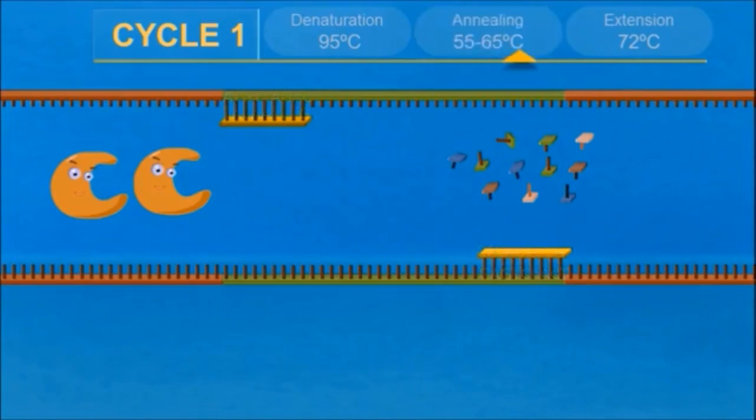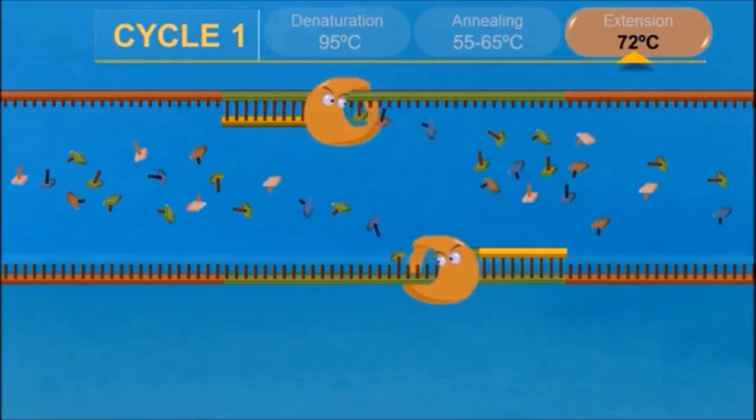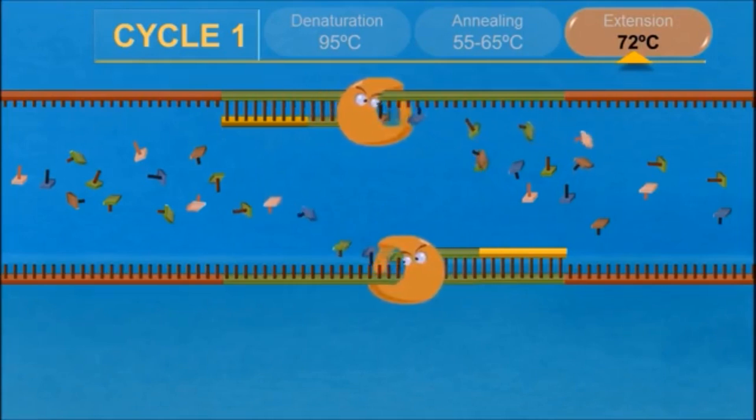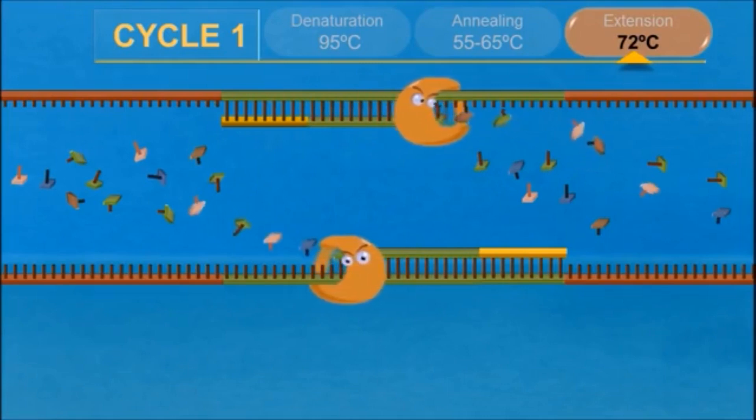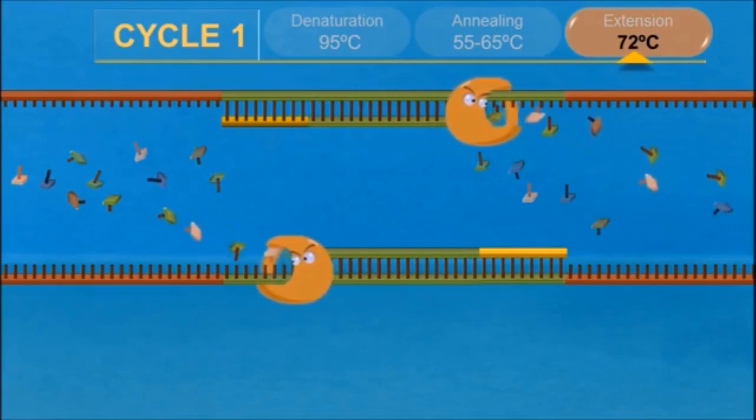Third step is extension or polymerization. The temperature is raised to 72 degrees Celsius. The Taq polymerase adds dNTPs behind the primer on the single-stranded DNA. These three steps constitute one cycle of the reaction. The process is carried out for about 20 to 30 cycles.